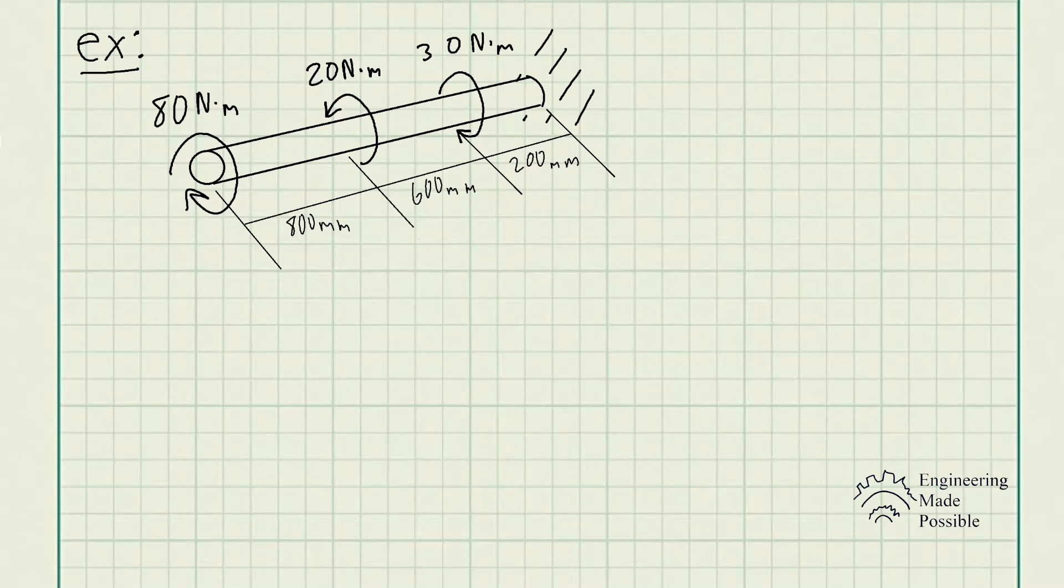The problem statement is, the 20mm diameter A36 steel shaft is subjected to the torque shown. Determine the angle of twist of the end B.